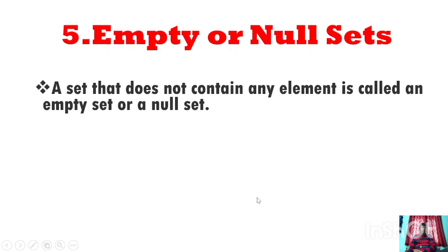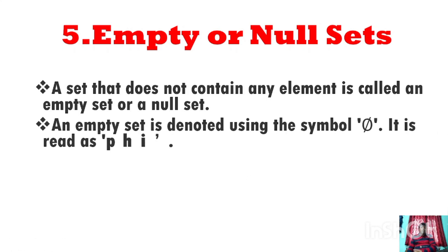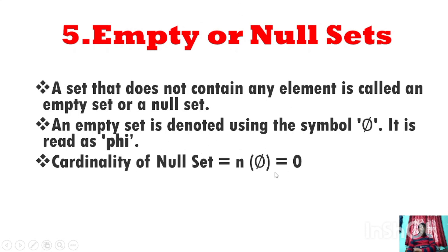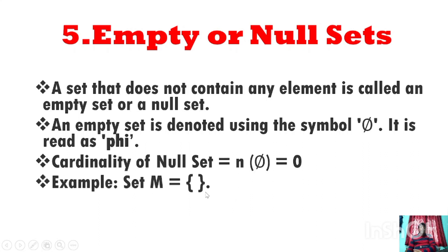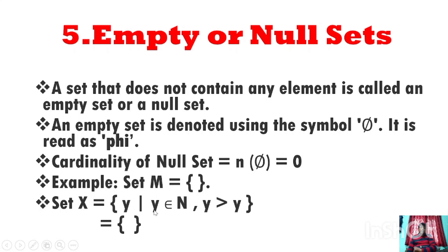Next point: empty set, or null set, or void set. A set that does not contain any element is called an empty set or null set. An empty set is denoted using the symbol phi (∅). The cardinality of the null set, N of phi, is equal to 0. For example, the set X = {Y : Y belongs to N, Y > Y} — it is never possible for a natural number to be greater than itself, so set X has no element. This is an example of a null set.